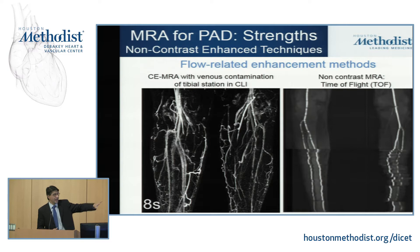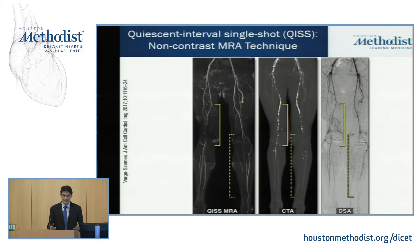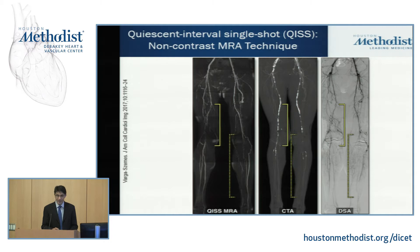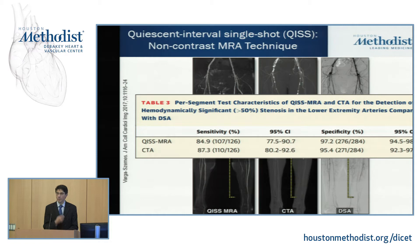A very powerful new non-contrast MRI technique now hitting the literature extensively is the quiescent interval single shot, or QISS sequence. This is a complete non-contrast head-to-toe technique. Comparing it to CTA and digital subtraction angiography, diagnostic accuracy is in the high 90s for both sensitivity and specificity. We are employing it in our own lab — it can be done completely without contrast, aids in interpretation, and is very accurate.